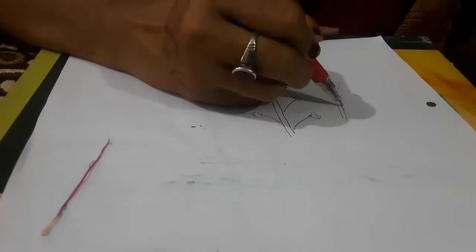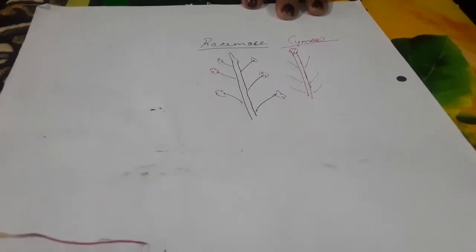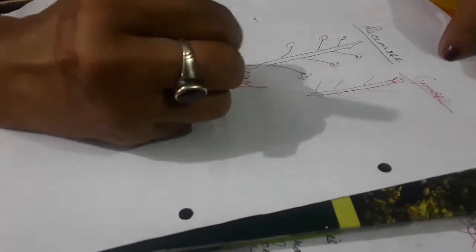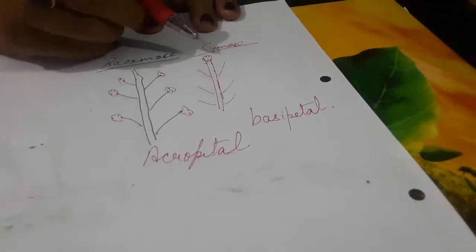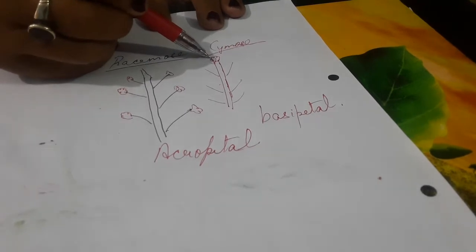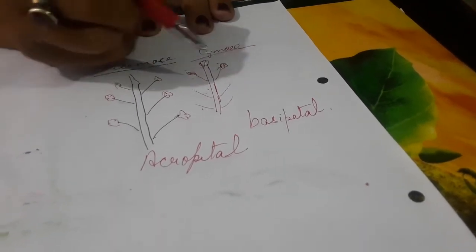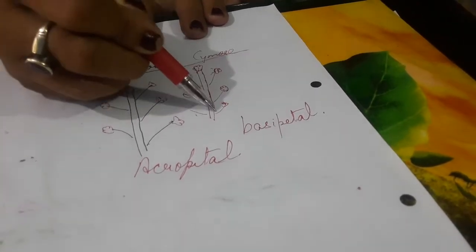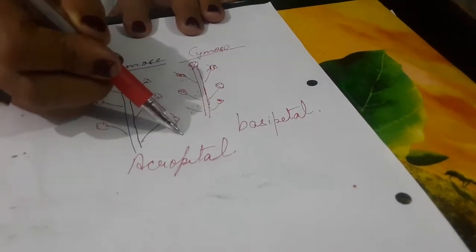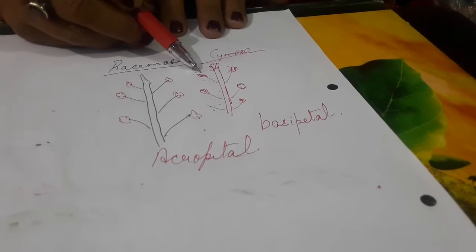The other type is cymose inflorescence. In cymose inflorescence, the main axis ends in a flower — just the opposite of racemose. The arrangement is basipetal: the uppermost branches bear flowers first, then successively lower branches develop flowers later.